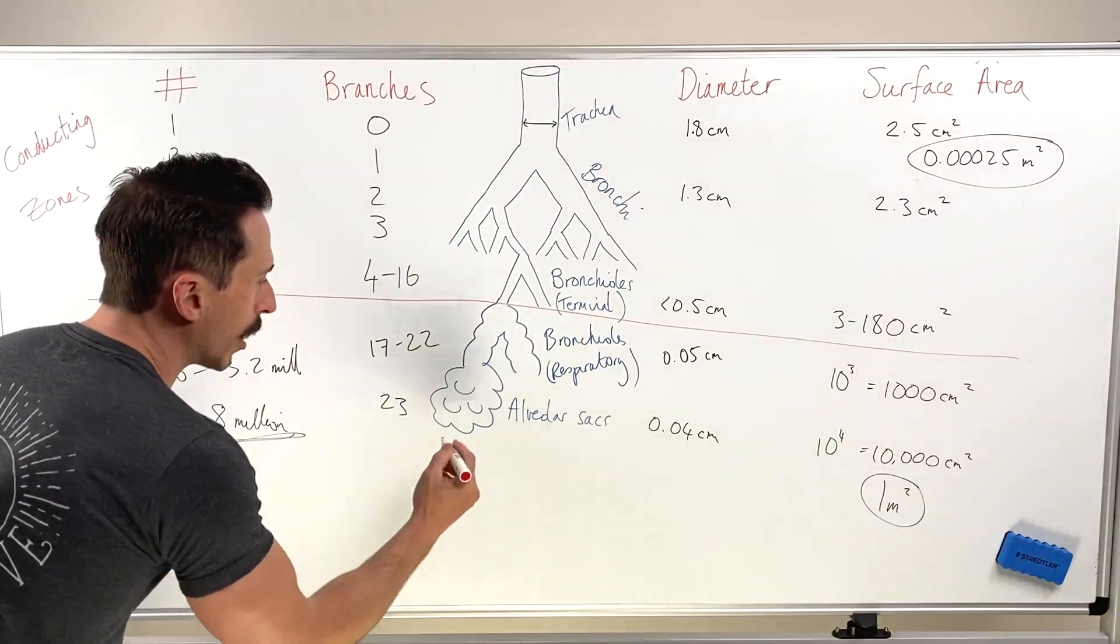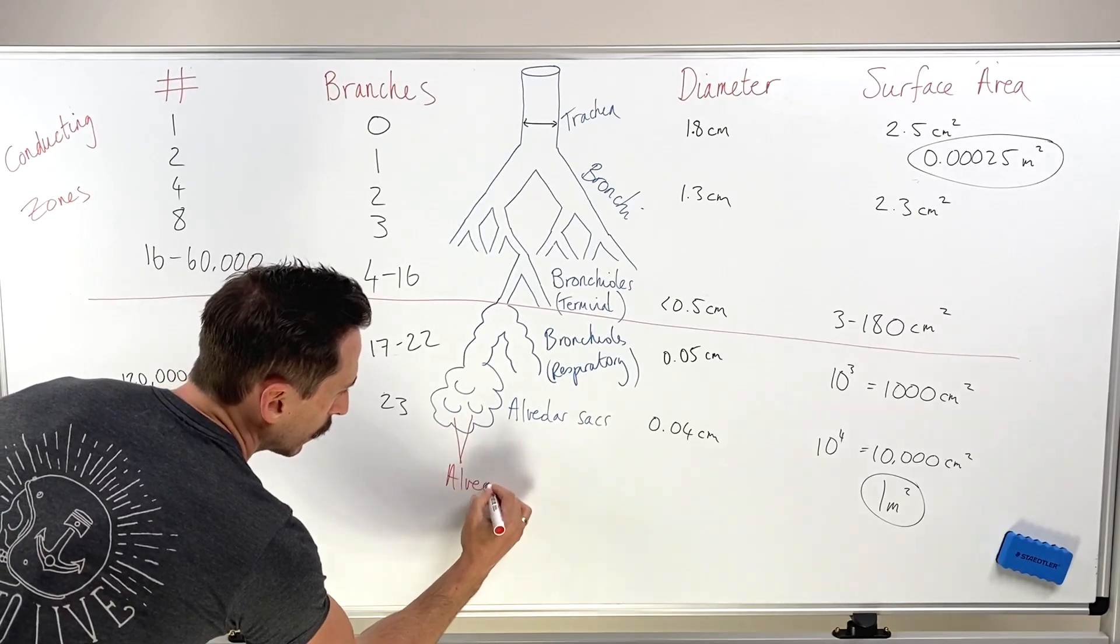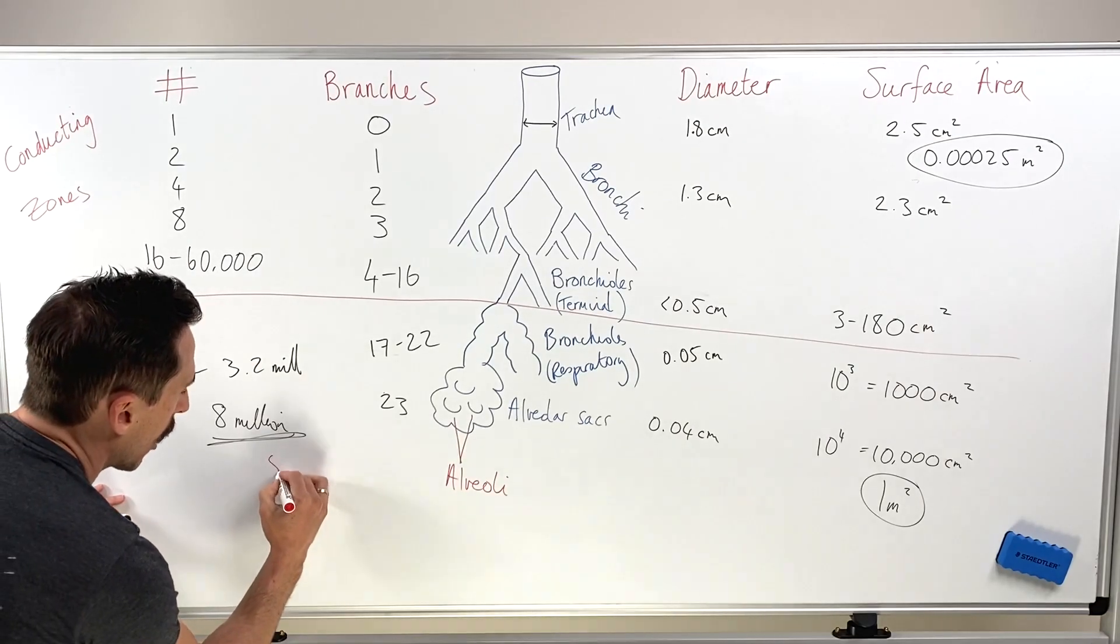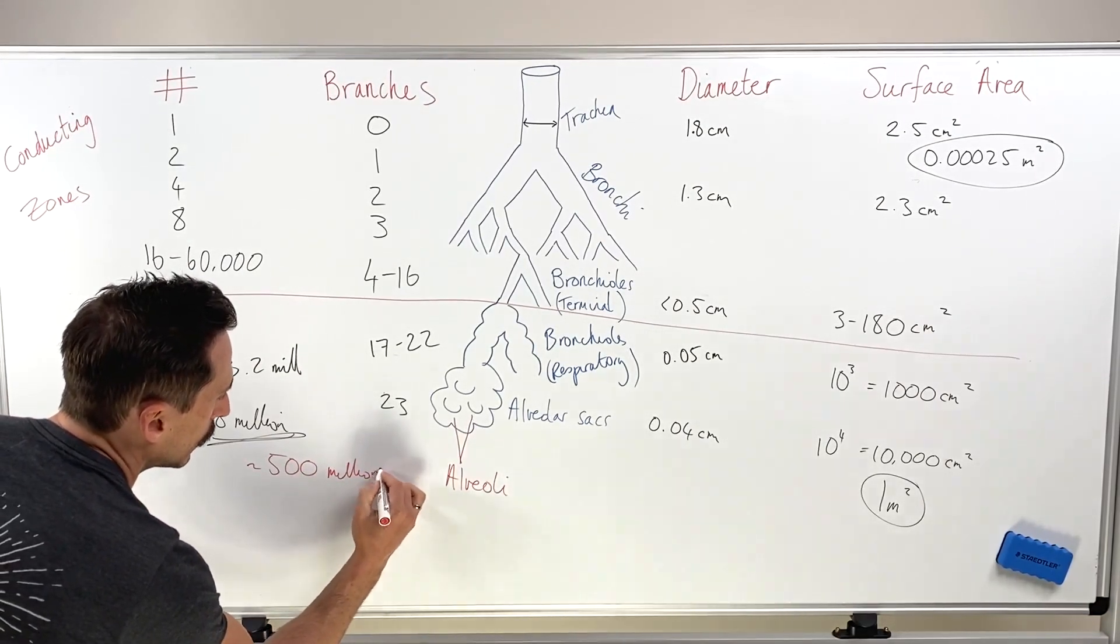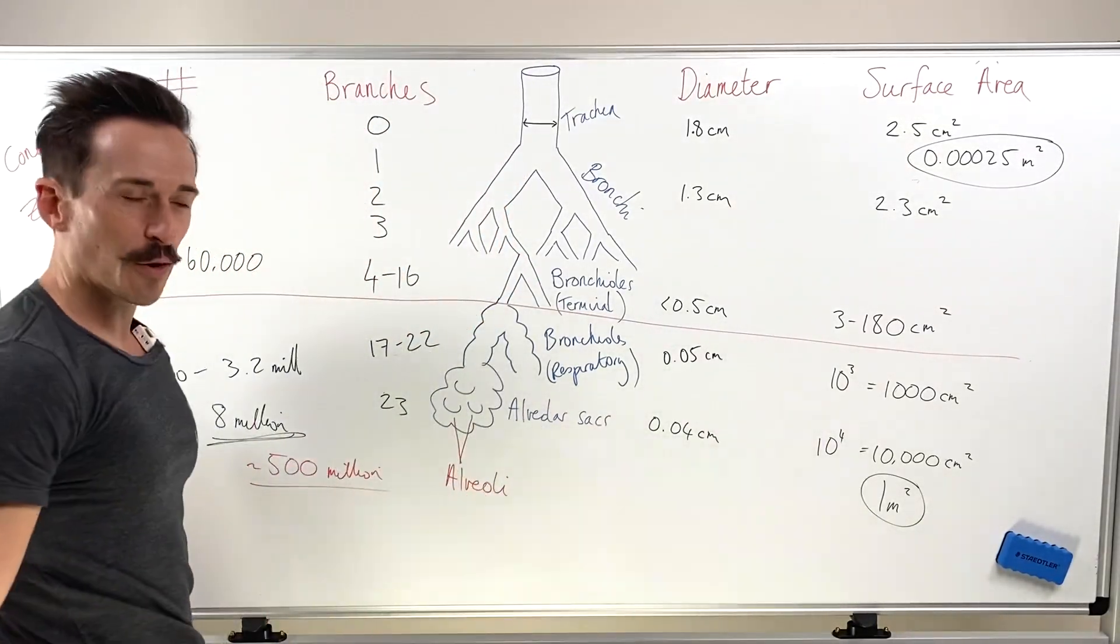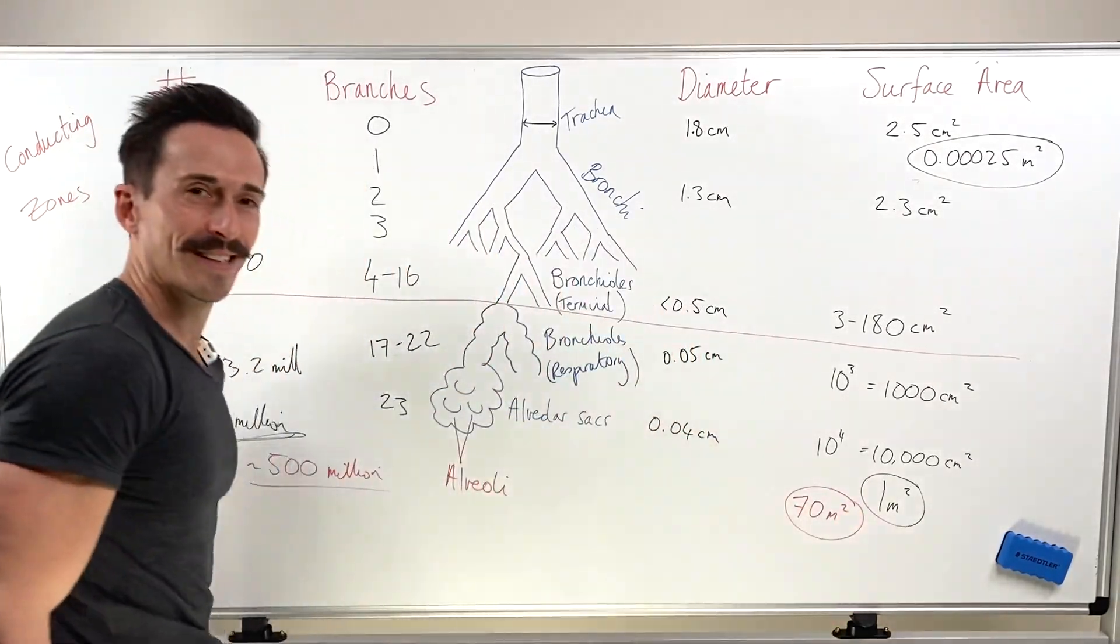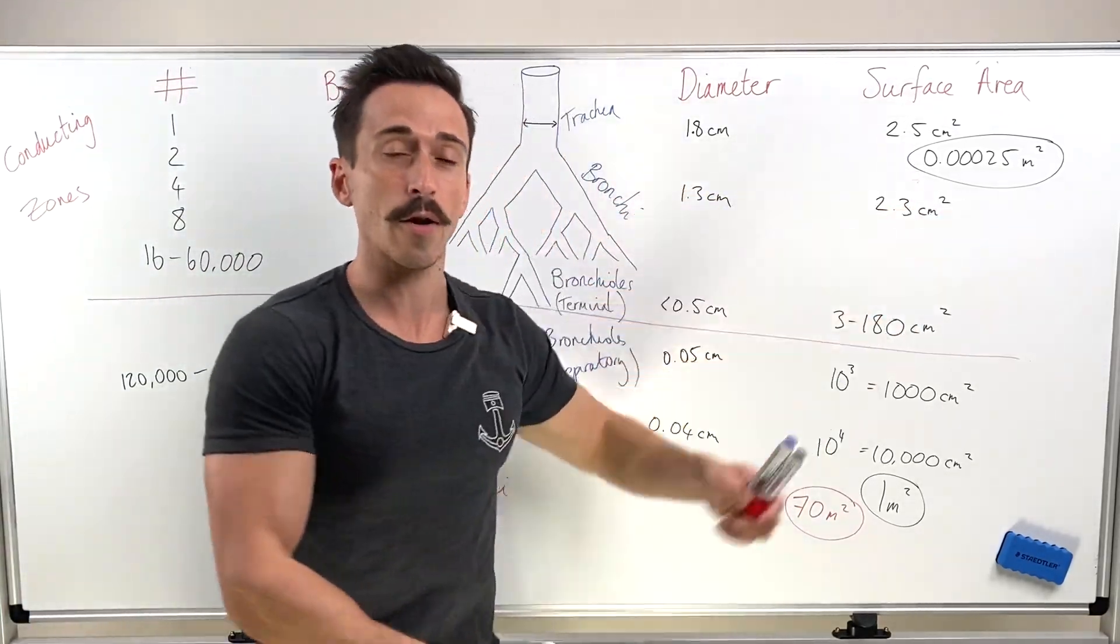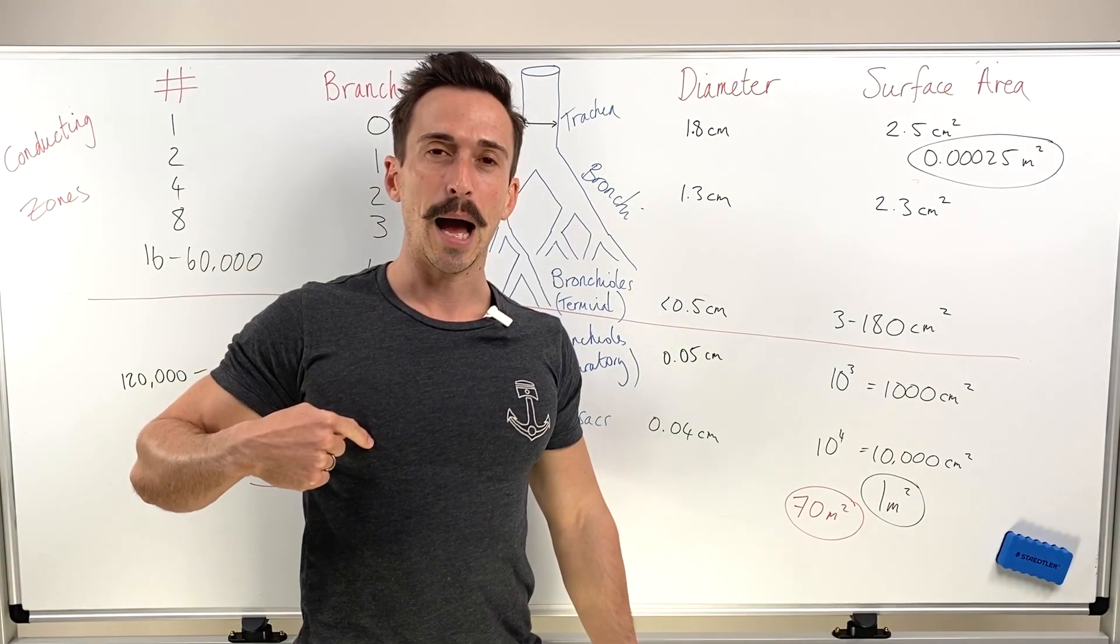Right at the end, we're now talking about the alveoli, the individual alveoli. These individual alveoli, we have in our lungs around about 500 million of them. 500 million of them. What's the surface area that it generates? 70 square meters. Look at that change from that surface area to that surface area, simply from going here to here. Amazing.